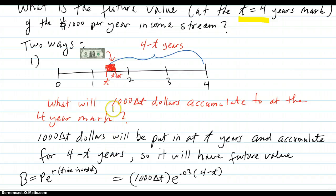What will a thousand delta T dollars accumulate to at the four year mark? So you put it in here, but it isn't in there for T years. It's in there for four minus T years, the rest of it, because you want to know what it's going to accumulate into for the rest of the time period until the four year mark. That's different than the present value. The present value is T years to get to the mark. Now it's four minus T years when you're at the T mark all the way to the end. So that's the difference.